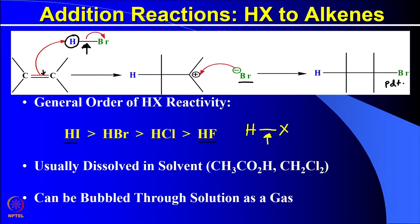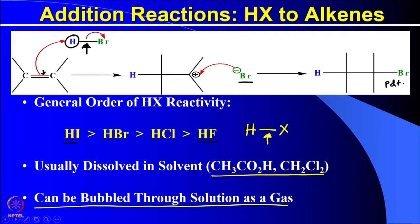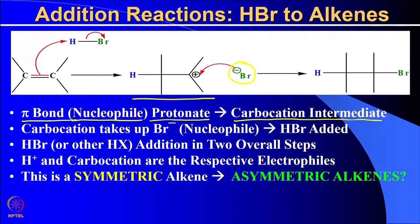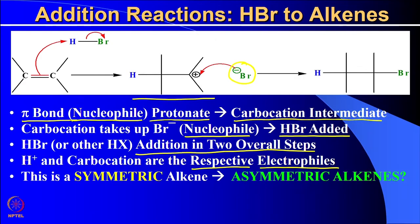Usually we do this reaction dissolved in some solvents. Sometimes HX is bubbled through a solution of alkene. When we understand the addition of HBr, we see that the pi bond, which is the nucleophile, first gets protonated and forms the carbocation as an intermediate. This is the carbocation intermediate. Then this carbocation takes up Br⁻, which is the nucleophile. So HBr gets added in overall two steps. H+ and the carbocation are the respective electrophiles. This is a symmetric alkene where this addition reaction is discussed.